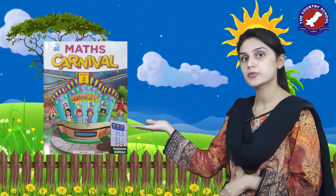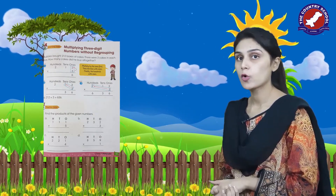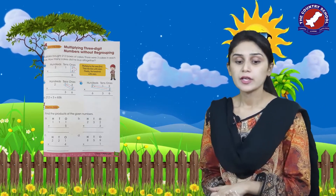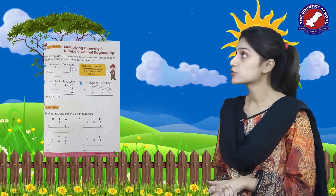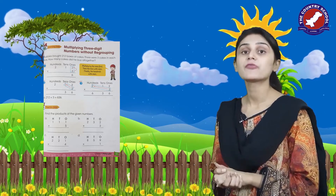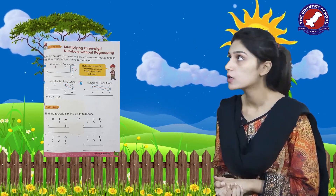Hurry up, open your Maths Carnival book to page number 53. Can you see a statement on page number 53? 'Bubble bought 212 boxes of cakes.'